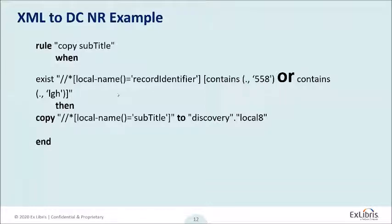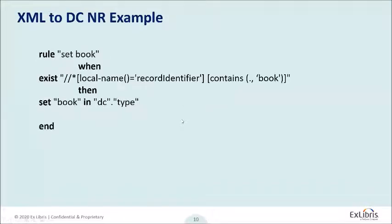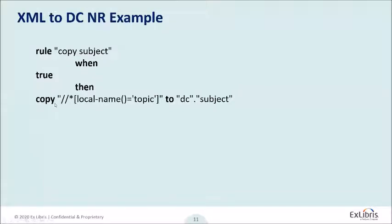One more thing I wanted to mention: if you notice, there are two parts to the rule. Part one is finding something, and once you find it, do some action. The first part — the find something part — is based on XPath technology or XPath protocols. The action part is set or based on the familiar Drool language we know from Alma. You can see the language is the same as what is familiar for you — such as set, copy, move, and so on.